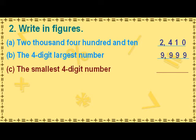The smallest 4-digit number has 1 in the thousands place, 0 in the hundreds place, 0 in the tens place, and 0 in the ones place. It is read as 1000.